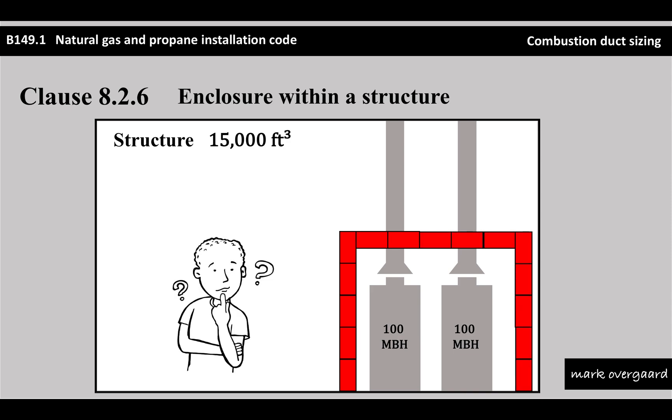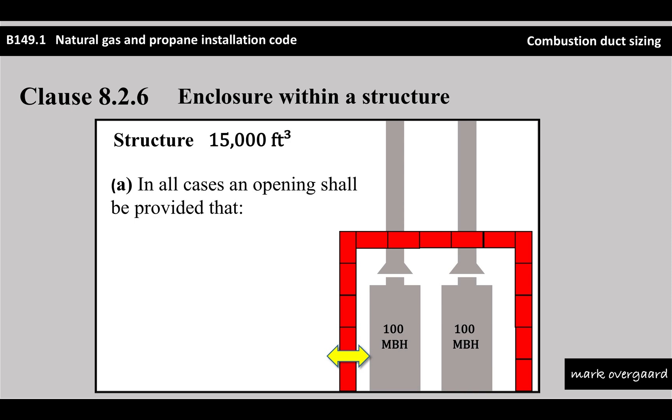Now we get back to Mike. He's thinking, well, we had air from the outside to the inside before - that's great. But because we've put this enclosure around the two appliances, where's the air coming from outside to inside into there? We've got ourselves an issue, and he's right. There is an issue, and that's where the clause comes into play. This is how you size that opening.